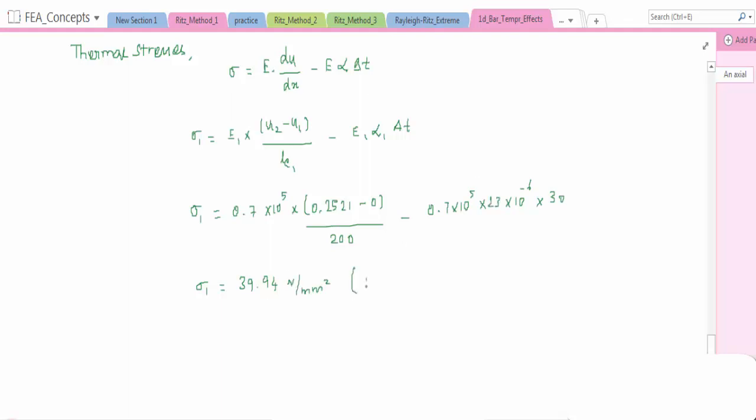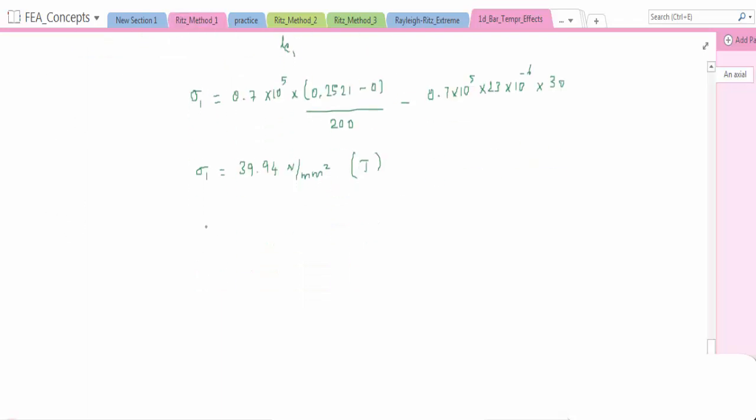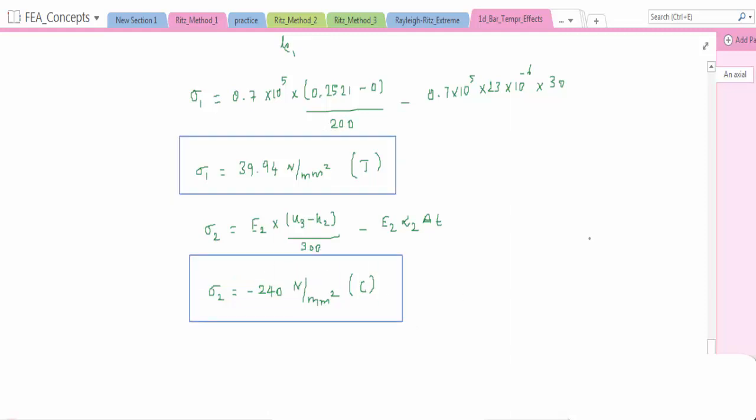If we simplify this, we are getting the value of 39.94 N/mm^2, that is tensile. Similarly for element 2, same formula, only thing is the displacement value will be changed here: -240 N/mm^2, that is in compressive. Tensile and compressive.